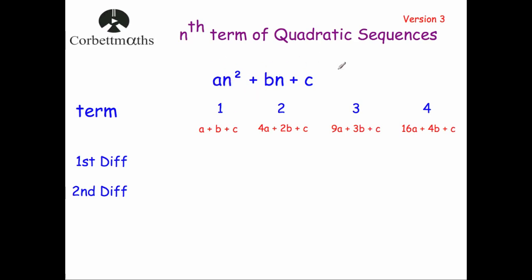In a typical question for the nth term of a quadratic sequence, you've got to find the values of a, b, and c. If you substitute 1 in for the first term, you get 1² = 1 times a = a, plus b times 1 = b, plus c. So the first term is a + b + c. For the second term, substituting 2 gives 2² = 4, so 4a + 2b + c. In a quadratic sequence you want to see what it's going up by each time.